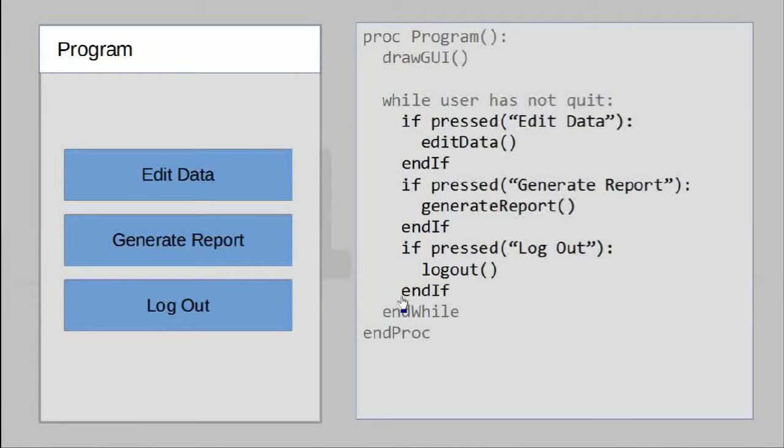So far so good. We've addressed the main problem we have, but because we're using an extremely simplified solution, there are some further problems. Let's go back to our very basic example. I'll show you a case in which we can actually cause the whole program to just grind to a halt. Let's consider what will happen if I were to click on the generate report button.